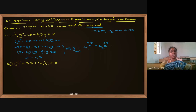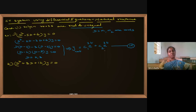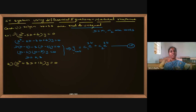This becomes the natural equation — call it equation 1a. We will use the initial conditions given in the question to find the values of c1 and c2, substitute those values, and then the final natural response will come.